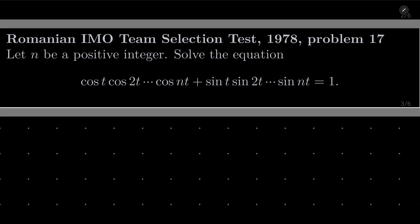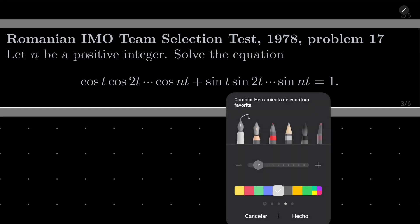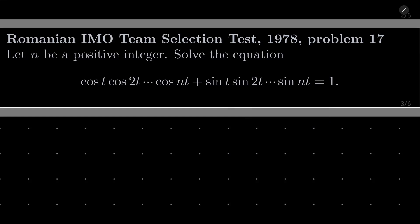Hello friends! In this video I'd like to solve the following problem from the Romanian International Mathematical Olympiad team selection test, year 1978, problem number 17. Let n be a positive integer. Solve the following equation: cosine of t times cosine of 2t, and so on, cosine of nt, plus sine of t times sine of 2t, and so on, sine of nt, equals 1.